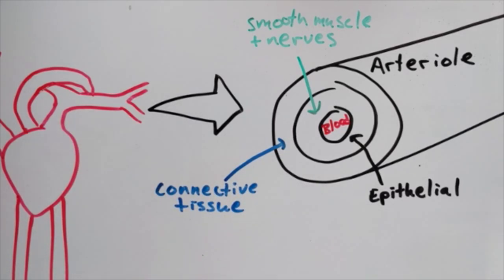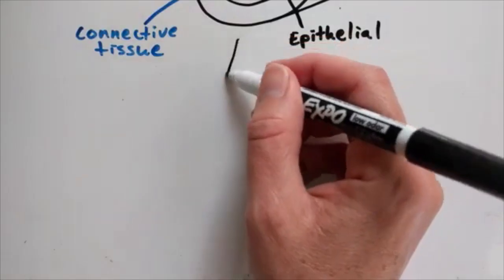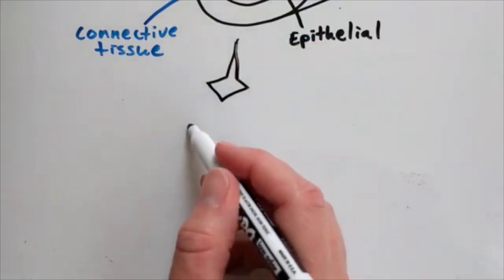Now we know the four main tissue types: epithelial, connective, muscle, and nervous. Tissues are made up of cells that are all doing the same function.